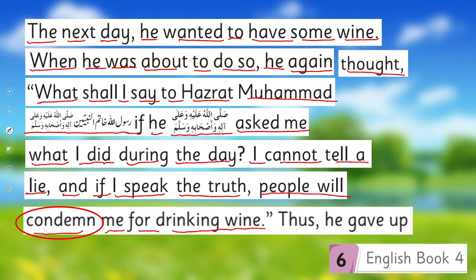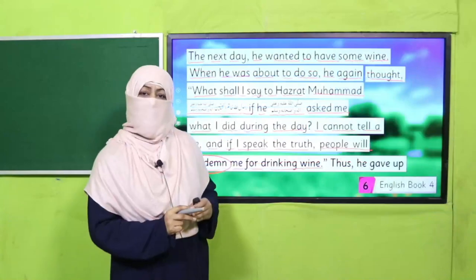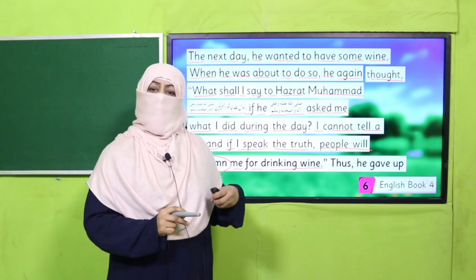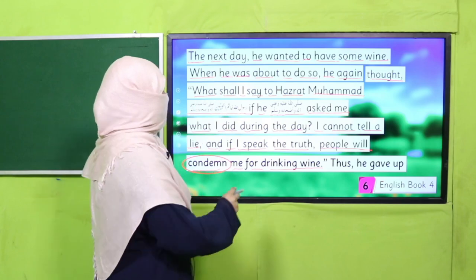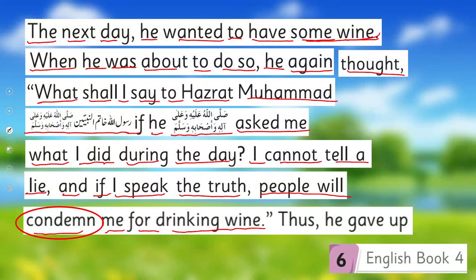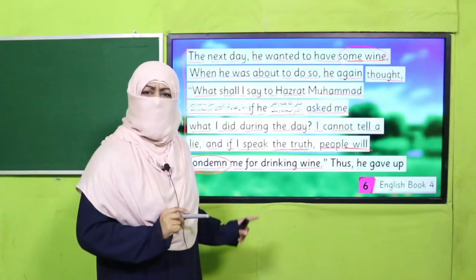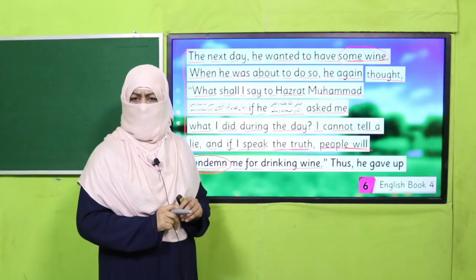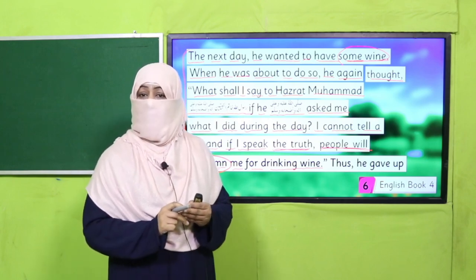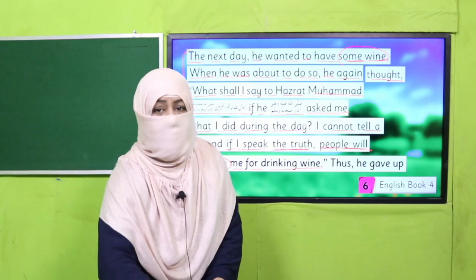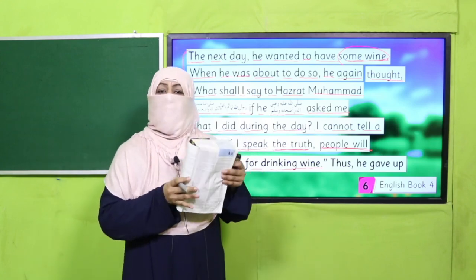The first day he stopped — he thought to go out for theft but stopped because of his promise. The next day he thought to take some wine but stopped because of his promise. He said: if I tell the truth, people will condemn me. Now here, I want to know what this word 'condemn' means. Whenever while reading you find a word which is difficult, you can use a dictionary, and I'm going to tell you how to use one.